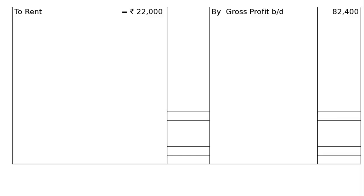In the profit and loss account: by gross profit brought down rupees 82,400. For expenditure, to rent rupees 22,000. Adjustment 4 tells us rent is paid for 11 months, so monthly rent is rupees 22,000 divided by 11, which is rupees 2,000. We must show rent for 12 months, so one month's rent is outstanding — add outstanding rent rupees 2,000. The final column shows rupees 24,000 rent for the whole year.